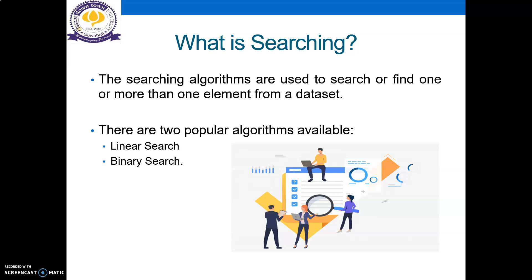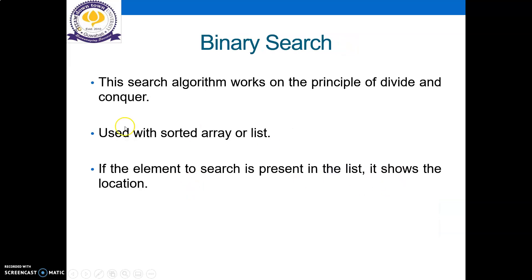In linear search, a number or an element is searched by comparing it with each element in the list one at a time. But in case of binary search, it is basically a divide and conquer method. So let's see what is binary search.